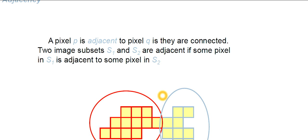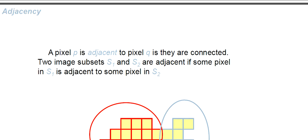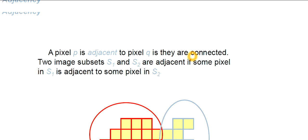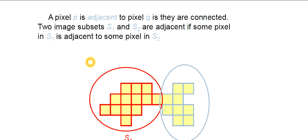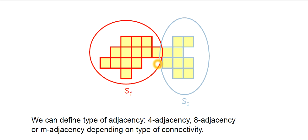The next point is adjacency. A pixel P is adjacent to pixel Q if they are connected. When we discuss neighbors and connectivity, we are essentially discussing the adjacency of pixels. Two image subsets S1 and S2 are adjacent if some pixel in S1 is adjacent to some pixel in S2. We can define four adjacency, eight adjacency, or M-adjacency depending on the type of connectivity. Today we discussed neighborhood, connectivity, and adjacency. Today's question: what do you understand by eight adjacency? Comment your answer. Bye-bye, take care.